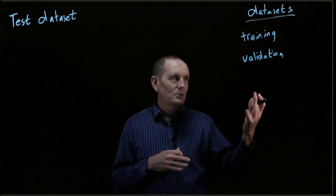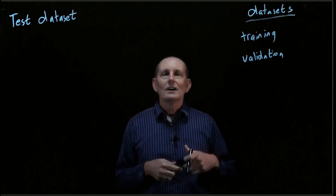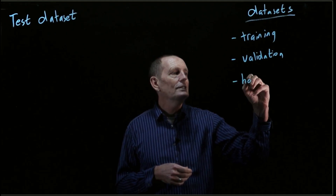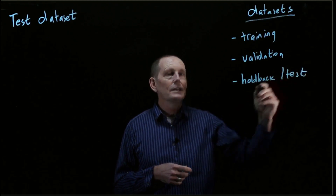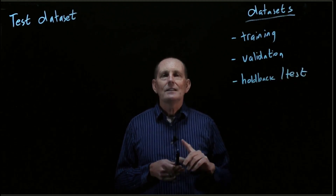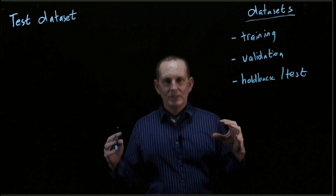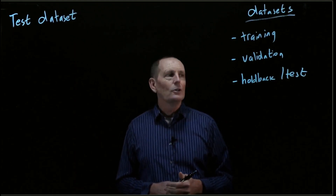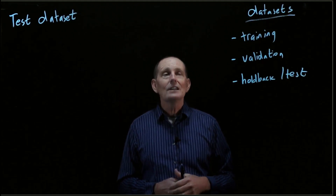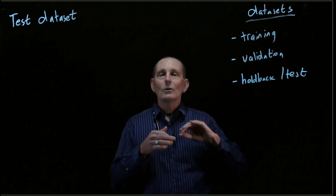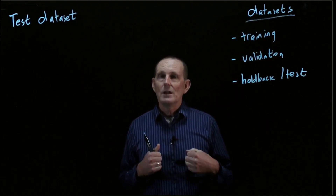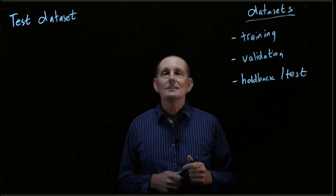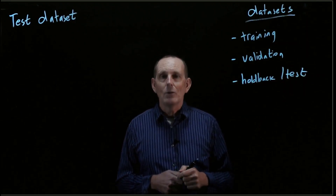So here's what we do: we do our training, we see how well we do on the validation, we go through this process of trying different and different configurations, and then finally we do an evaluation on the test — also called the holdback — data set. This is a data set that, before we started all this, we took some sample data and put it aside in a vault, saying we're not going to look at it until the very end. At the very end, once we've done all our training and we like the validation loss, we're ready to deploy the model or publish our paper — we go ahead and run it to see what loss we get.